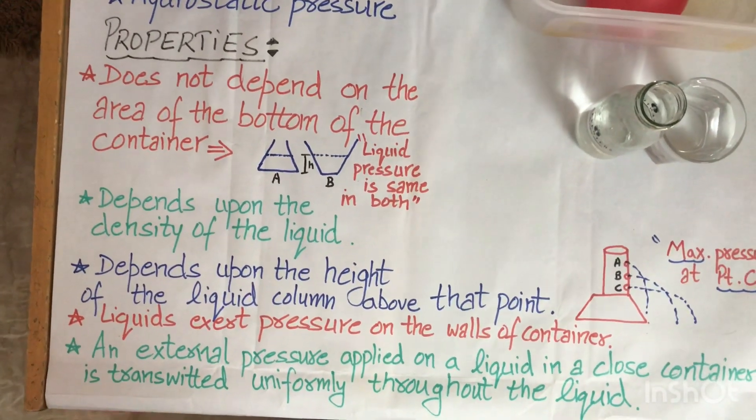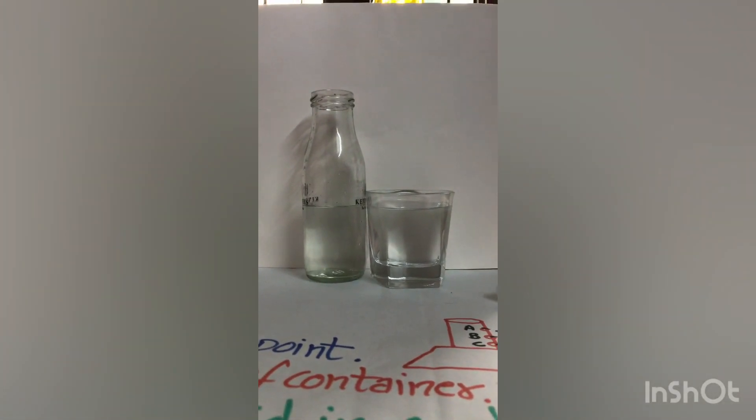Now we will verify all the properties of liquid pressure with the help of activities. The first property — that liquid pressure does not depend upon the shape of the bottom of the container — is shown using a circular-shaped and a hexagonal-shaped container. With the same height of liquid column, the pressure at the same height is the same in both, regardless of the different bottom areas.